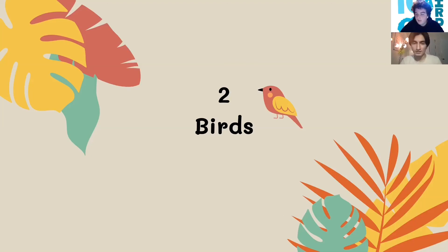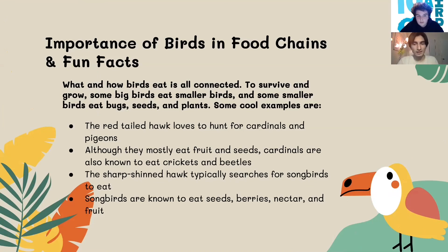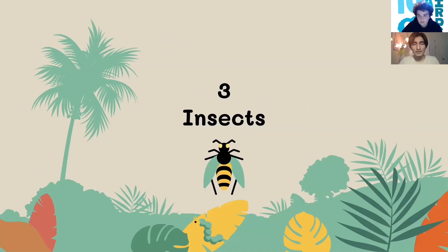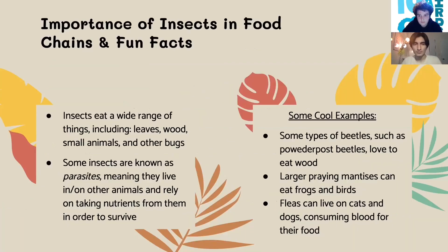First we'll look at birds. Some important stuff about birds and how they relate to the food chain is that what they eat and how they eat it is all connected — in order to survive, some birds have to eat smaller birds, and some smaller birds have to eat bugs, seeds, and plants. Cool examples include the red-tailed hawk, who loves to hunt cardinals and pigeons. Although they mostly eat fruit and seeds, cardinals are also known to eat crickets and beetles. The sharp-shinned hawk typically searches for songbirds to eat, and songbirds are known to eat seeds, berries, nectar, and fruit.